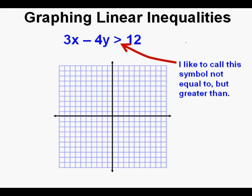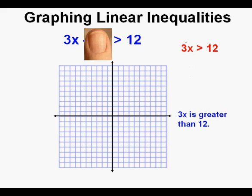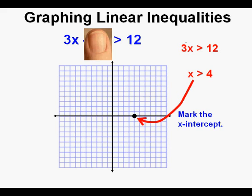Let's graph this linear inequality: 3x minus 4y is greater than 12. When I get ready to graph, I like to think of it as 'not equal to, but greater than' — we'll get to that a little later. I like to graph lines in standard form by finding the x and y intercepts. To find the x intercept of this boundary line, we cover the y term with our thumb. We have 3x is greater than 12, so we divide both sides by 3 and get x is greater than 4. We mark the x intercept at x equals 4.